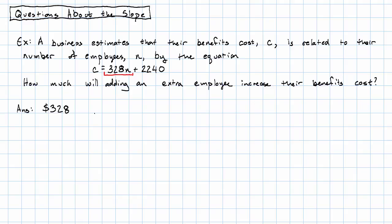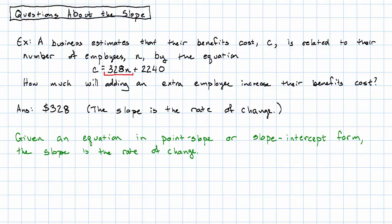In this context, we see that the slope is the rate of change. So if we're just given an equation that happens to be in point-slope or slope-intercept form, the slope is the rate of change.